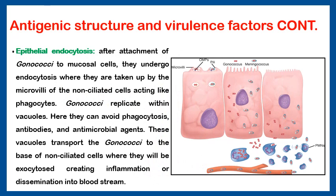Another virulence factor is the ability to enter mucosal cells — what we call epithelial endocytosis. After attachment of gonococci to the surface of the mucosal cell, the cells undergo endocytosis, similar to phagocytosis. The gonococci live inside vacuoles, protected against antibodies or antimicrobial agents. These vacuoles transport the bacteria to the base of the cell where they are exocytosed to be disseminated through blood to other parts of the body.